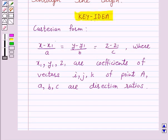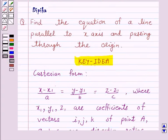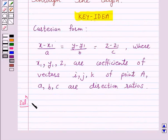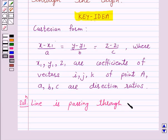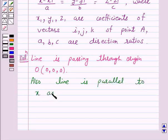So let's start the solution. Now we have to find the equation of a line which is parallel to x-axis and passing through the origin. The line is passing through origin and is also parallel to x-axis.